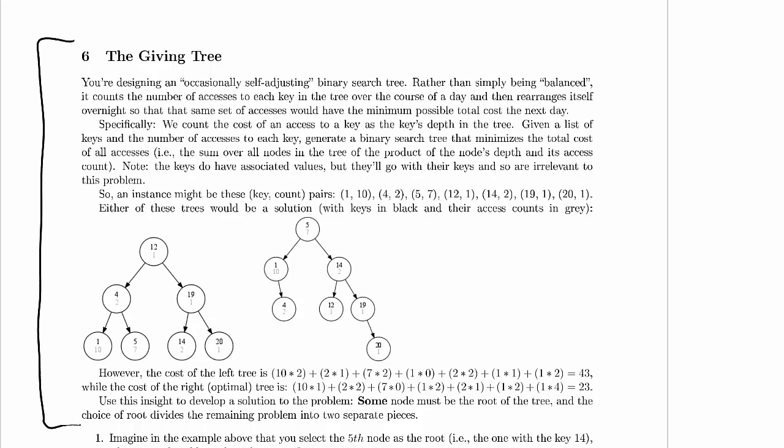You're designing an occasionally self-adjusting binary search tree. Rather than simply being balanced, it counts the number of accesses to each key in the tree over the course of a day, and then rearranges itself overnight so that the same set of accesses would have the minimum possible total cost the next day. So each night, it rearranges itself to be optimized for whatever set of accesses it saw that particular day.